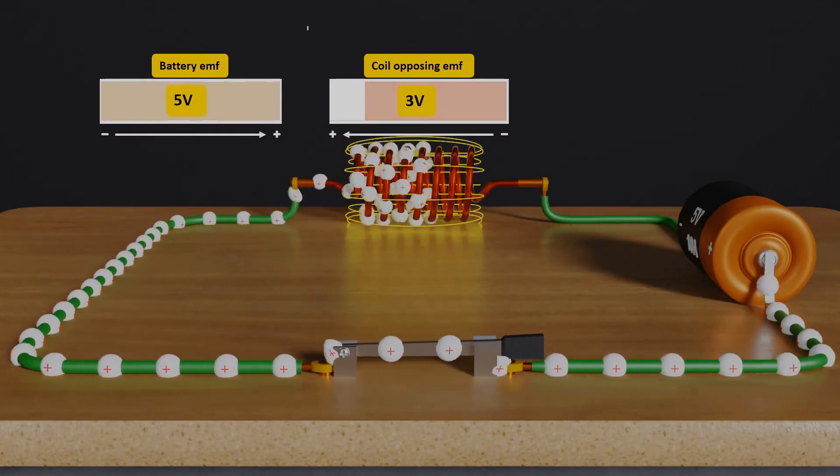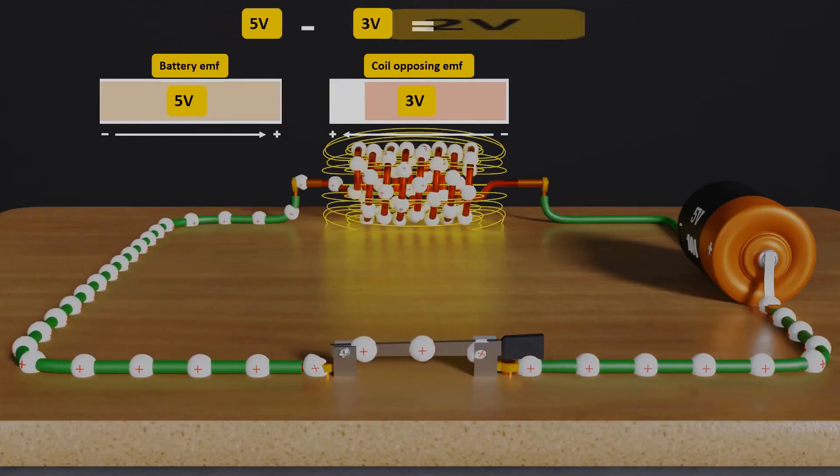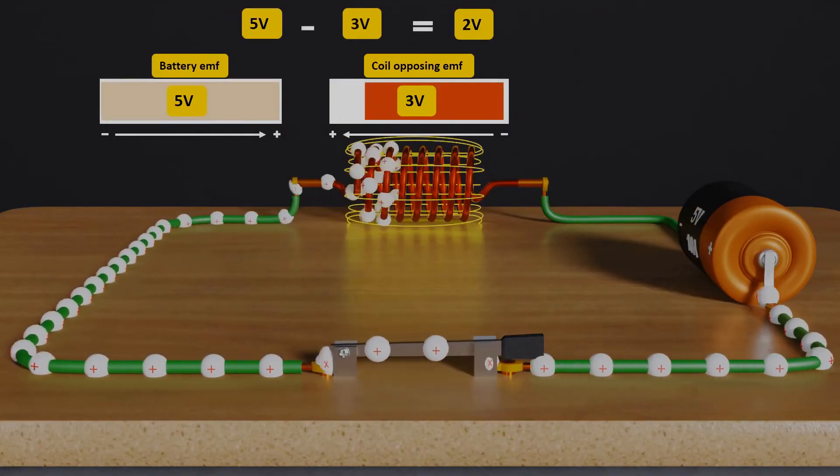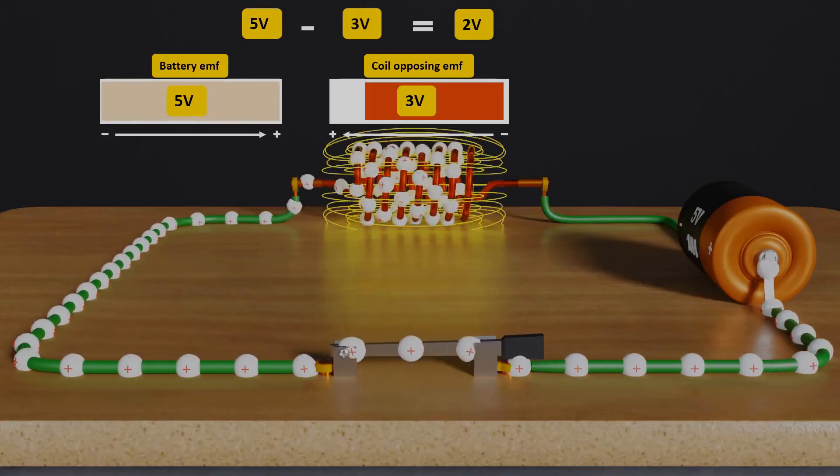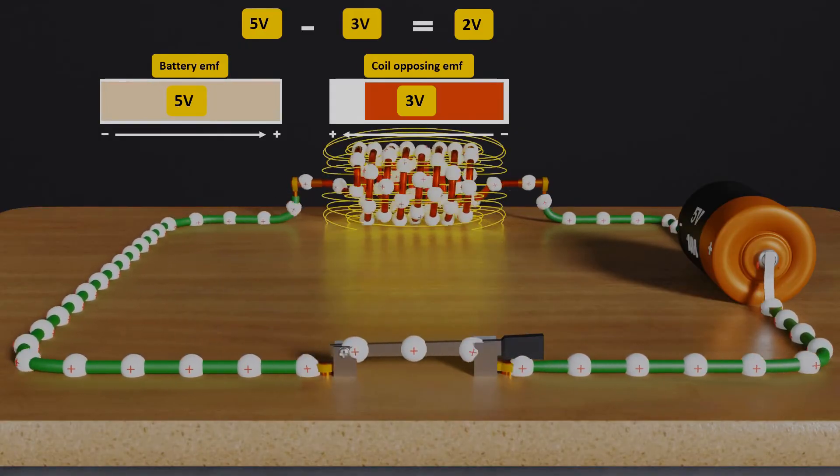And net EMF will be 5 minus 3, that is 2 volts. And net current will be some positive value this time, in the direction where the battery wants to flow it.